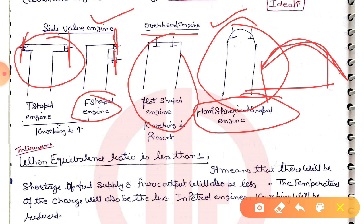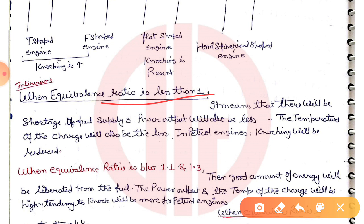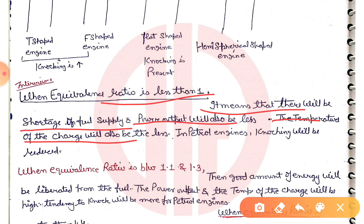When the equivalence ratio is less than 1, it means there is a shortage of fuel supply — a lean mixture. In this condition, the power output will be less, the temperature of the charge will also be less, and petrol engine knocking will be reduced.